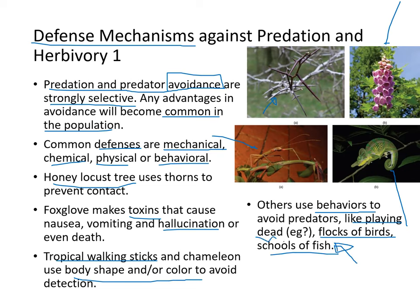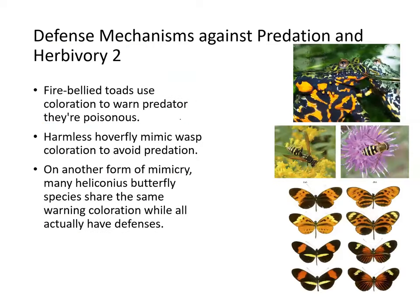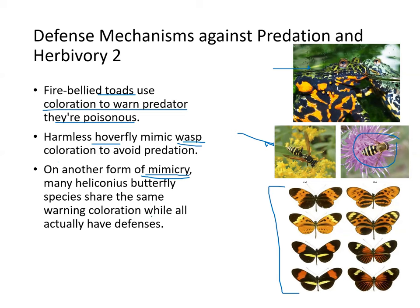An example of playing dead is the opossum. The fire-bellied toad uses bright coloration to warn predators it is poisonous. A harmless hoverfly mimics the wasp to avoid predation. Another form of mimicry is seen in Heliconius butterflies — multiple species share the same warning coloration, so collectively they all survive better.